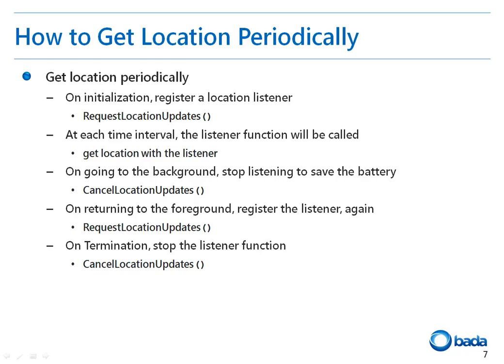Now let's look at how to get location updates periodically. For location updates, the registry function you need to use is RequestLocationUpdates. For each time interval mentioned in the registry function, the OnLocationUpdatedListener function will be called. When an application moves to the background or when location updates are not required, the CancelLocationUpdates API can be called to cancel the location updates, which saves battery life. On returning the application to the foreground, you need to re-register for location updates using the RequestLocationUpdates API.